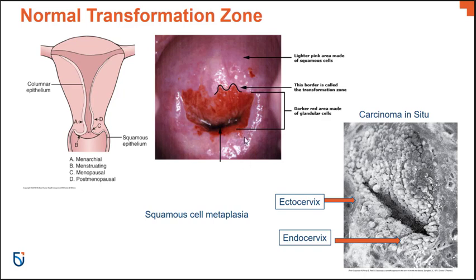This image of the cervix shows you the normal transformation zone up close — you can see where the lighter region meets the darker region. What's interesting is that the transformation zone actually changes throughout the female's life, so it's sort of a moving target where it can be difficult to ensure you're getting the correct tissue during a Pap test. The transformation zone is really an area of changing cell types and is the most common place for abnormal cells to develop.